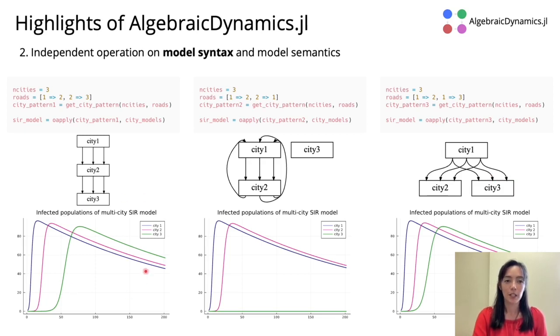Down here we see the plots for each of these multi-city SIR models. In our first example, we again see that the infected population of city 1 peaks first, followed by peaks in the infected populations of cities 2 and 3. In our middle example, city 3 is an isolated island and so never receives infected people from city 1 or city 2. And that means its infected population stays zero the whole time.